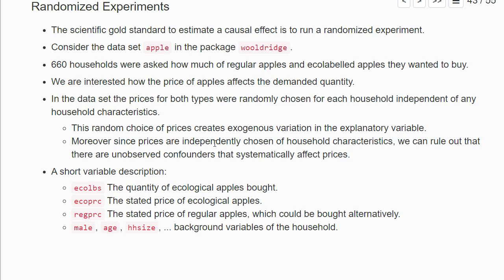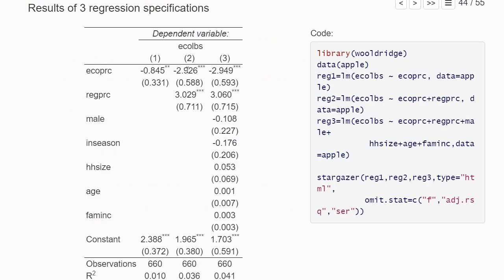That's the beauty and power of randomized experiments. We rule out confounders if we perfectly randomize, and we have a source of exogenous variation. Here are results of three regression specifications we ran.